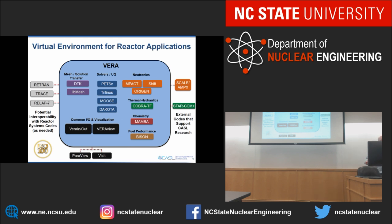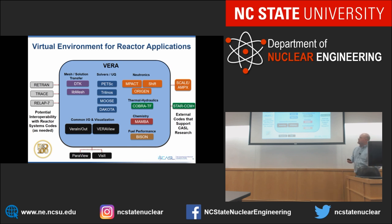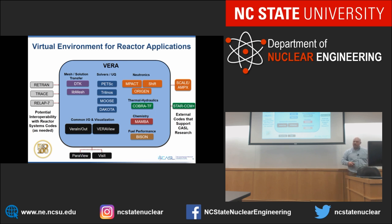On the thermal-hydraulic side, the primary code is COBRA TF, co-developed by Oak Ridge and NC State, and soon to be publicly distributed by NC State. That collaboration has gone very well. As we continued to refine COBRA TF, we realized there are many areas needing improvement in the sub-channel thermohydraulics capability. As a foundation, we use the StarCCM Plus CFD code — we can use CFD to inform and improve the understanding of where COBRA is missing accuracy.